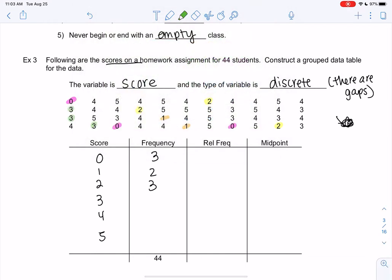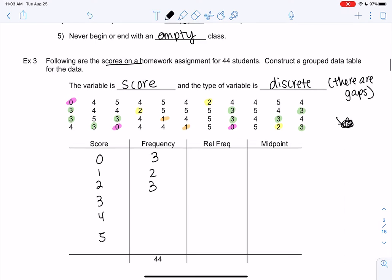I guess that's it. Three students got two on the homework. 3s. Okay. 1, 2, 3, 4, 5, 6, 7, 8, 9.